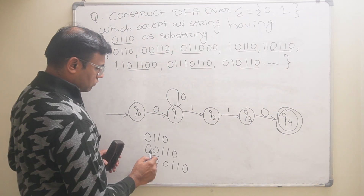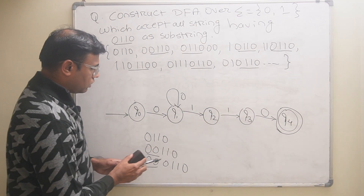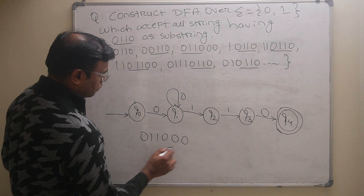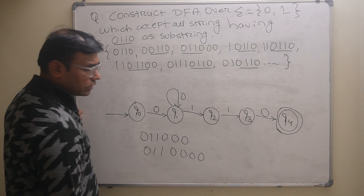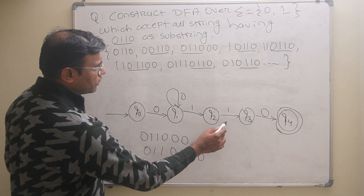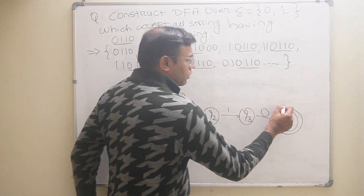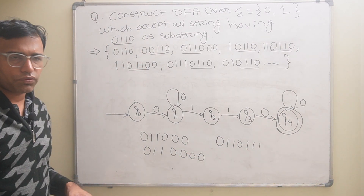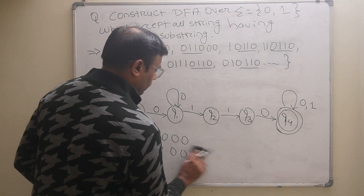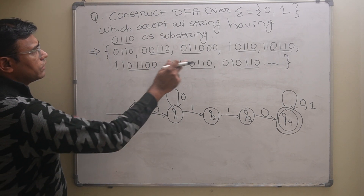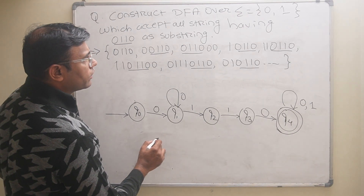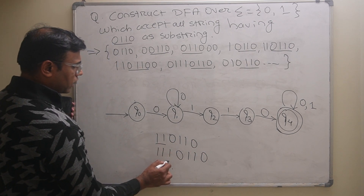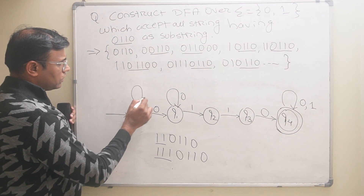The next possibility is 0,1,1,0 followed by any number of zeros, so we apply the loop of zero on q4 to accept any trailing zeros. Then it can start with any number of ones — like 1,1,0,1,1,0 or 1,1,1,0,1,1,0 — so we apply a loop of one on q0 so it can accept any number of leading ones.